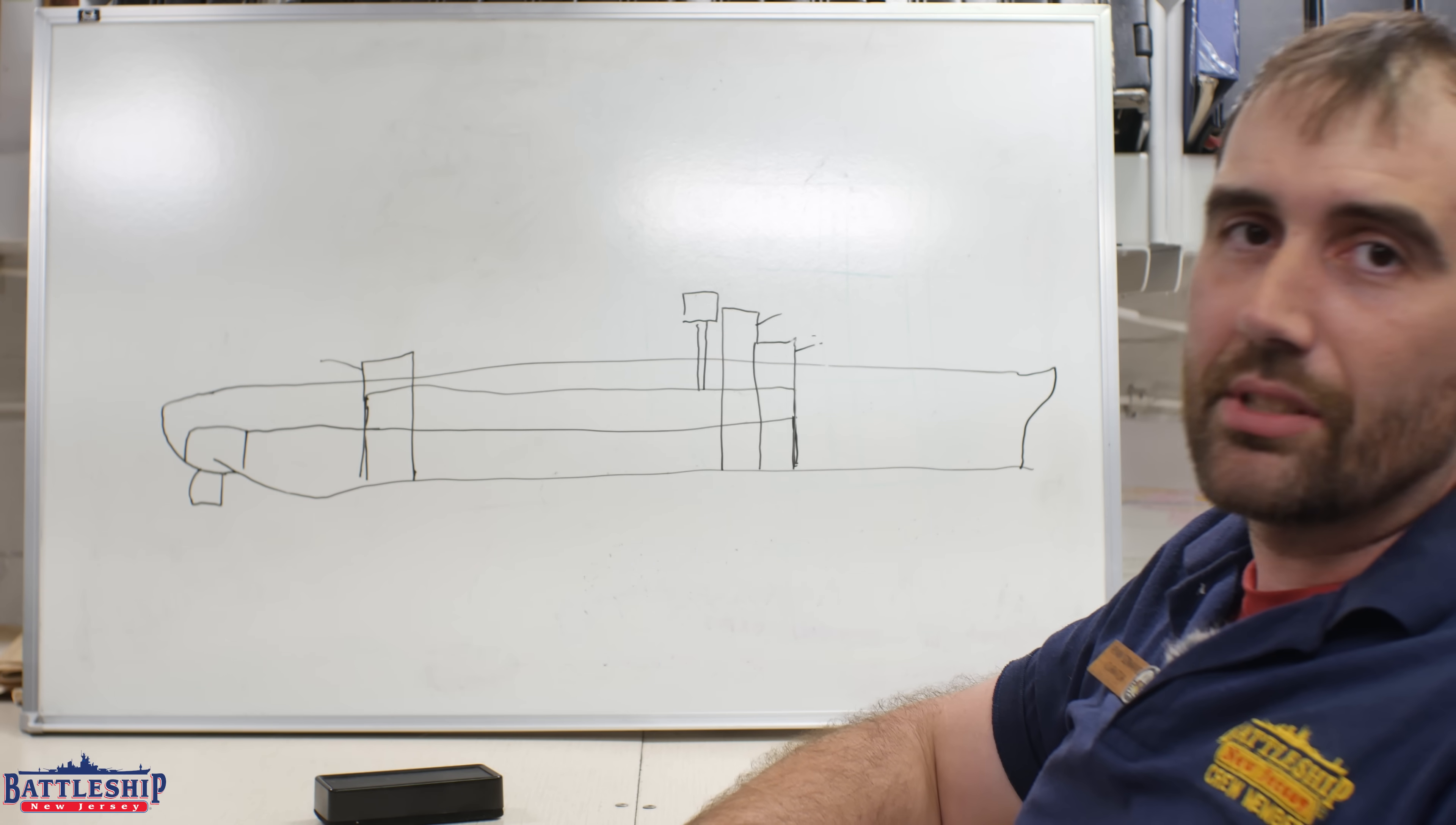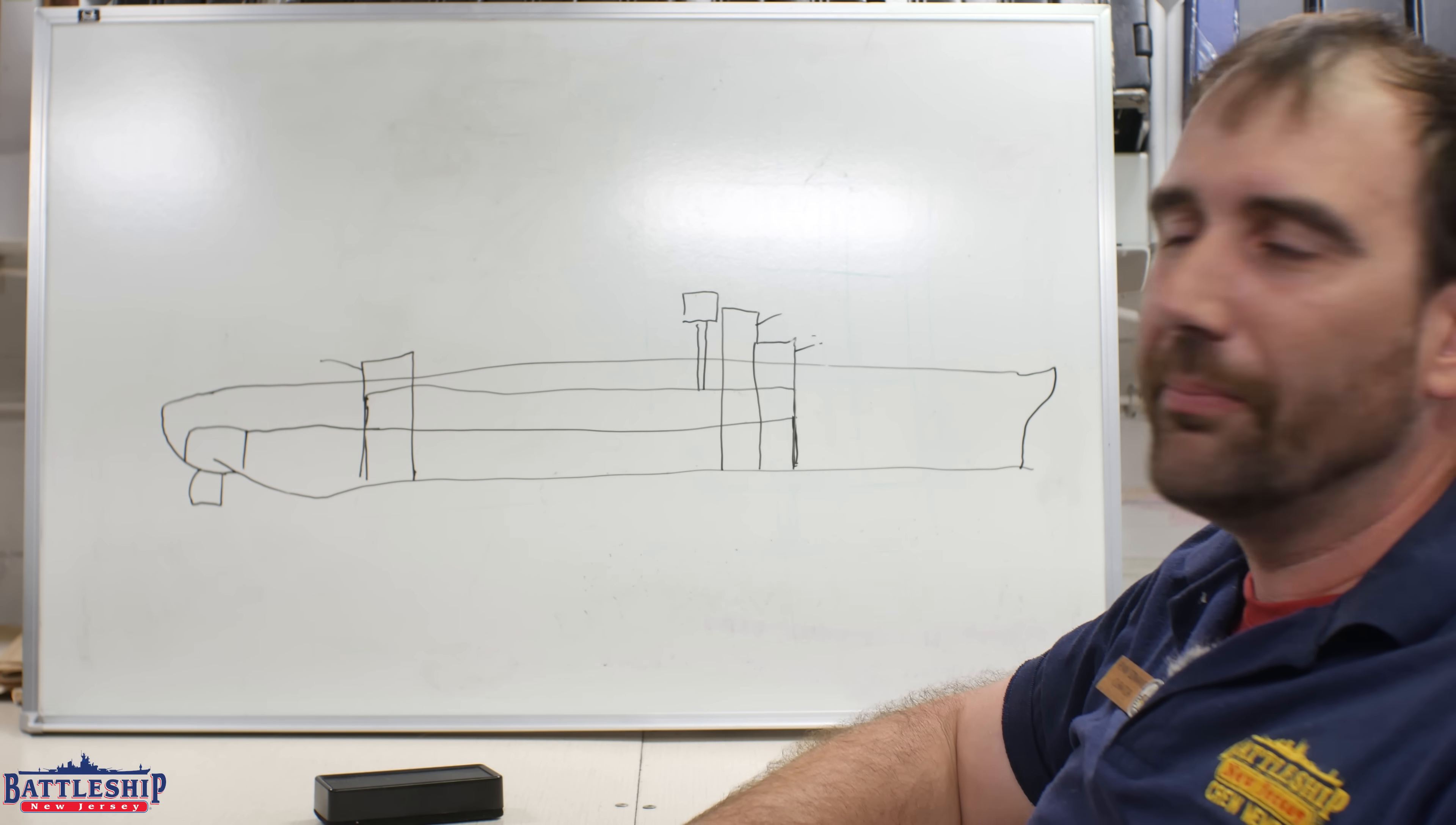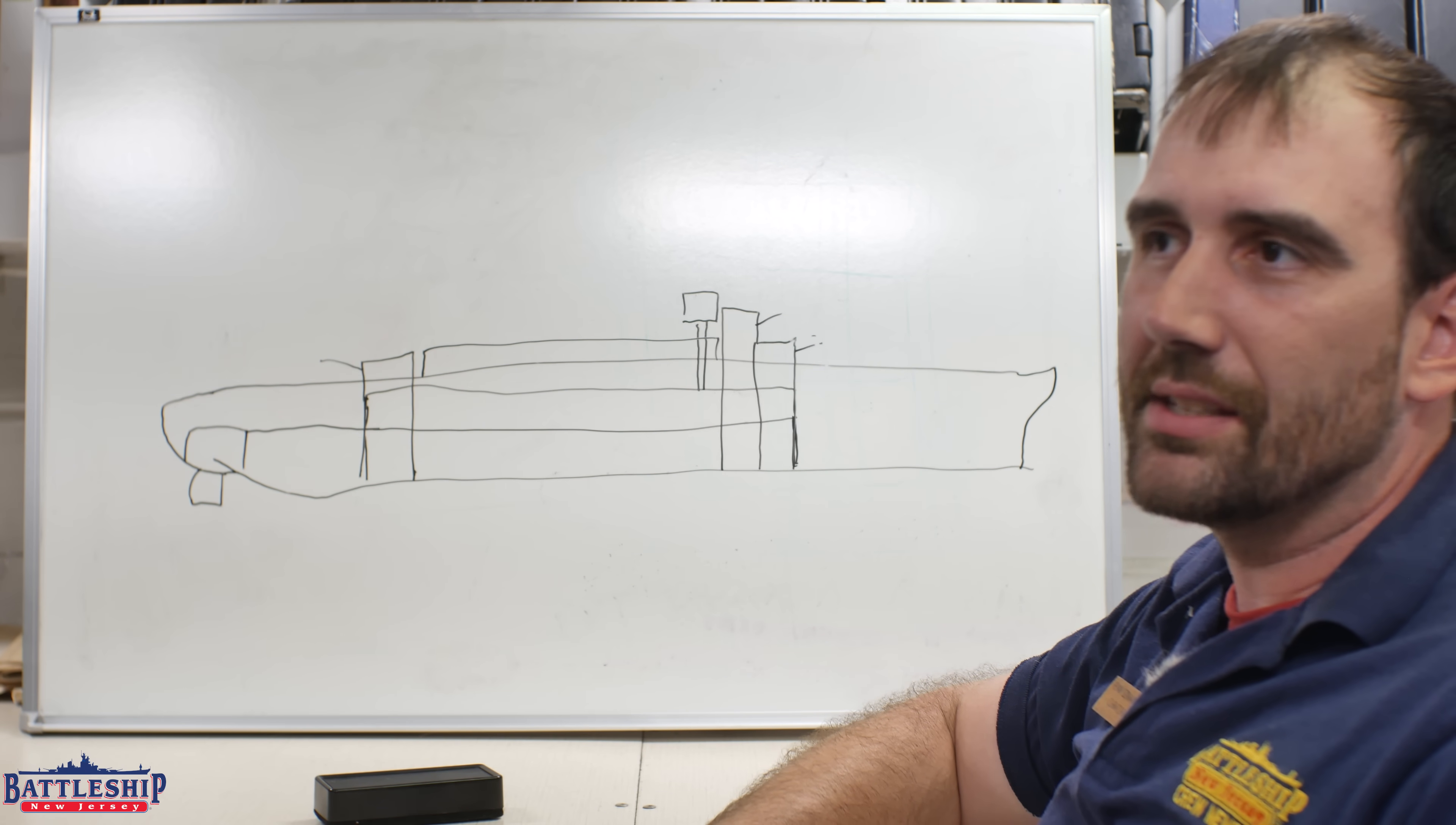Now just to finish our drawing here, so much of the ship is armored with important stuff in it that we don't really have much room for our crew. So the superstructure includes a lot of berthing spaces in it.